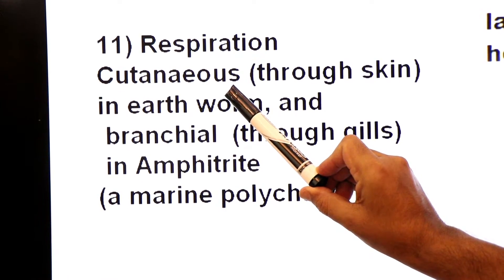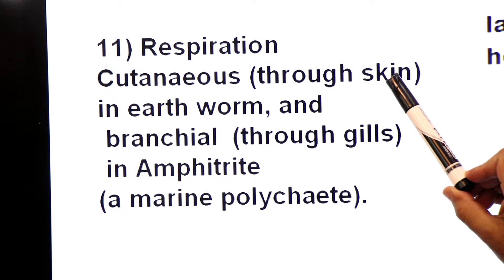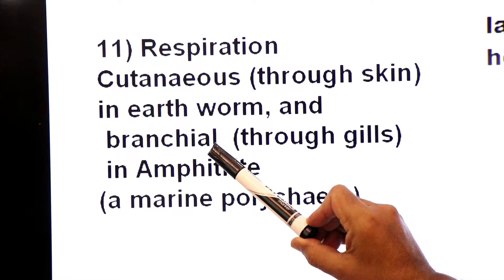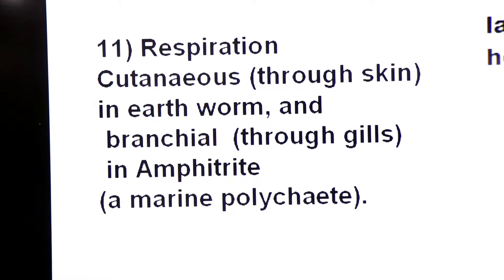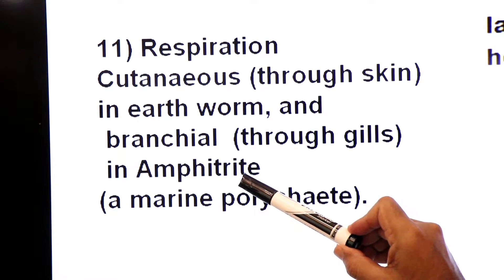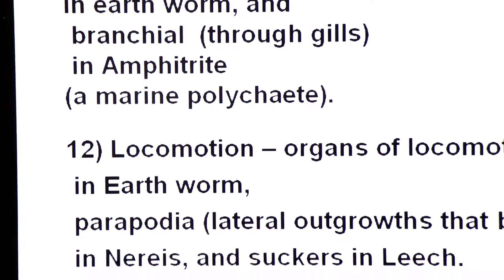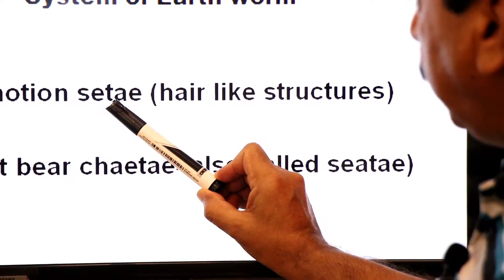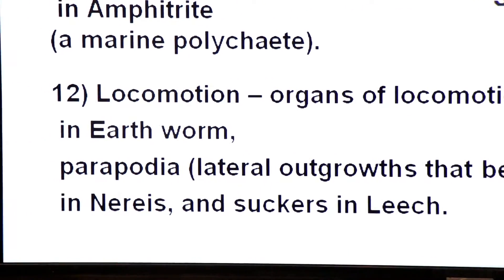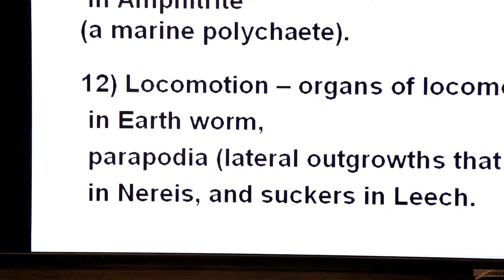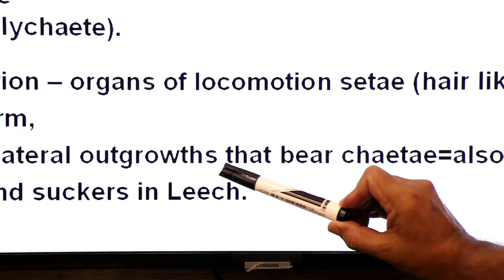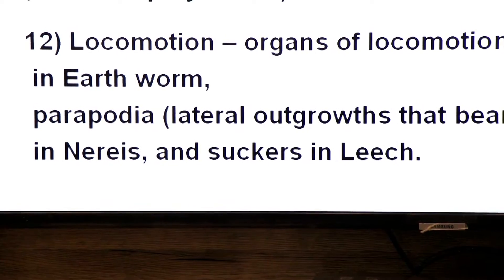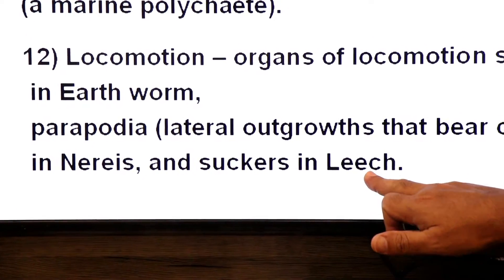Respiration can vary; for example, a marine polychaete has different respiratory structures. Locomotory organs differ among annelids: in earthworms, locomotion is by setae, which are hair-like structures present on the ventral side. In nereis, locomotion is by parapodia, which are lateral outgrowths that bear setae — also called chaetae — hair-like bristle structures. In leech, locomotion takes place by suckers.